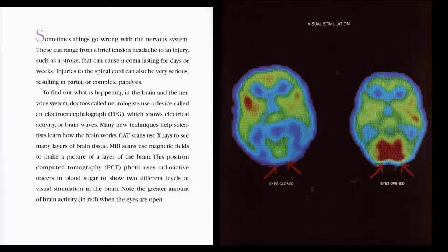To find out what is happening in the brain and the nervous system, doctors called neurologists use a device called an electrocephalograph, which shows electric activity or brain waves. Many new techniques can help scientists learn how the brain works. CAT scans use x-rays to see many layers of brain tissue. MRI scans use magnetic fields to make a picture of a layer of the brain. This positron computed tomography photo uses radioactive tracers in blood sugar to show two different levels of visual stimulation in the brain. Note the greater amount of brain activity in red when the eyes are open.